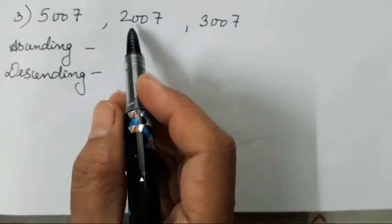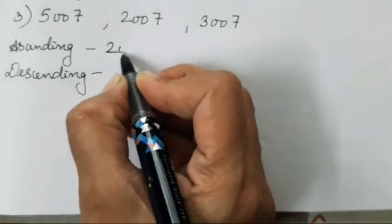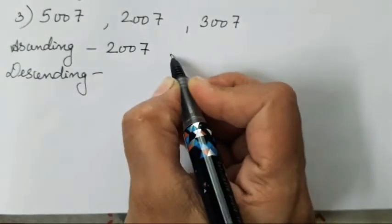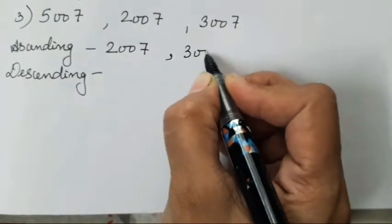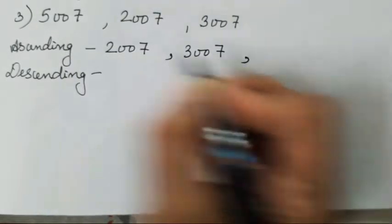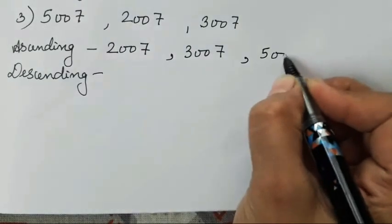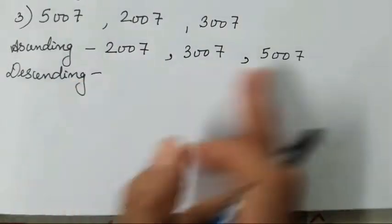So what you have to do is check the digit one by one depending upon their place value. First you will see 5, 2 and 3. So which is smaller? 2 is going to be smaller. So 2007, then 3007, and then 5007.